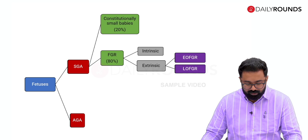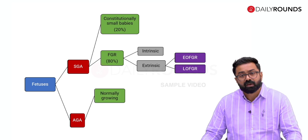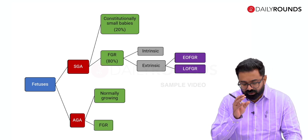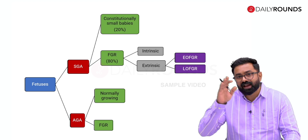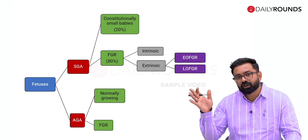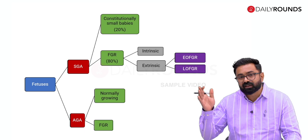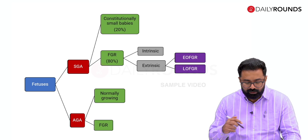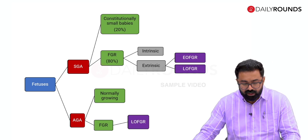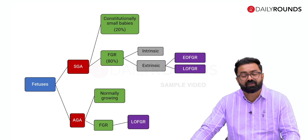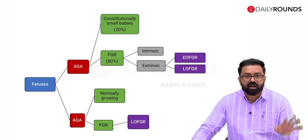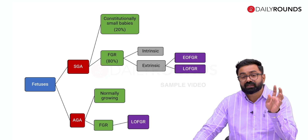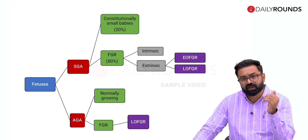Appropriately grown fetuses mostly show a normal growth trajectory, but a small subgroup is still growth restricted because if they are not growing to their desired potential there is a fall in growth, seen in conjunction with abnormalities in cerebral blood flow — the first sign of fetal hypoxia. FGR in AGA is mostly late onset FGR. Early onset FGR in an appropriately grown baby is very unlikely because in early onset FGR the placental disease is very severe, causing growth restriction early on.